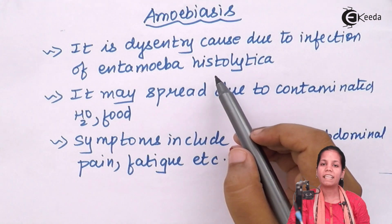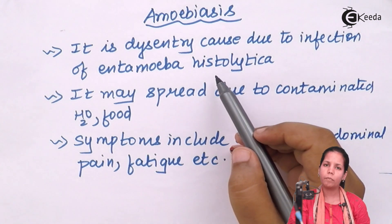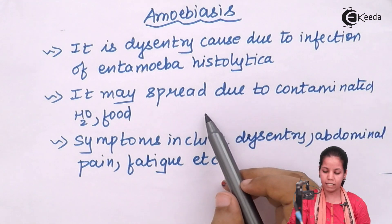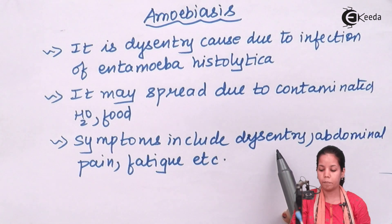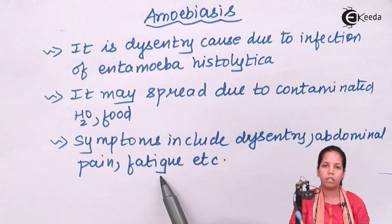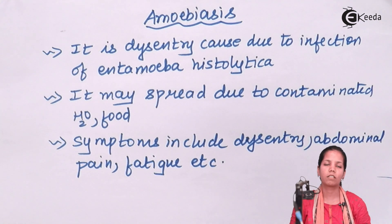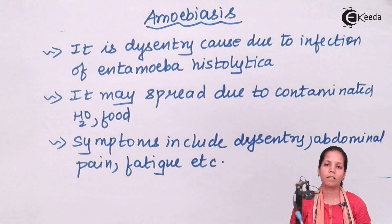Entamoeba histolytica can gain entry to your body through food and water, multiply inside your body, and take nutrition from your body cells. In the process you will have dysentery, diarrhea, and fatigue. Symptoms include prolonged dysentery, excessive stool formation, abdominal pain due to bowel movements, irritation in the anal region, fatigue, and constant headaches. This was amoebiasis — the organism behind it is Entamoeba histolytica.